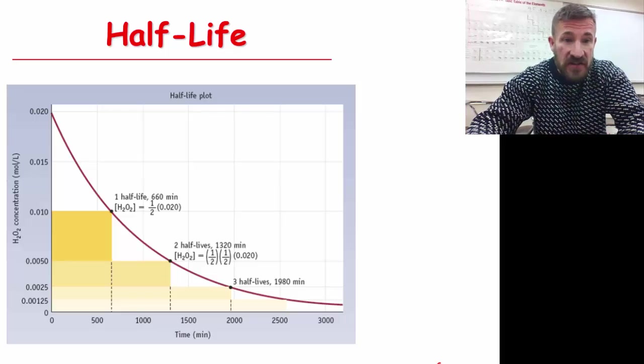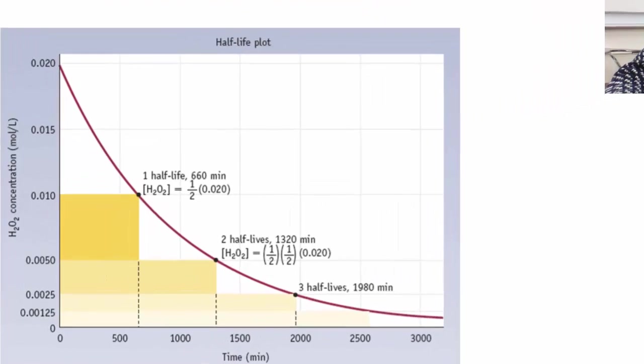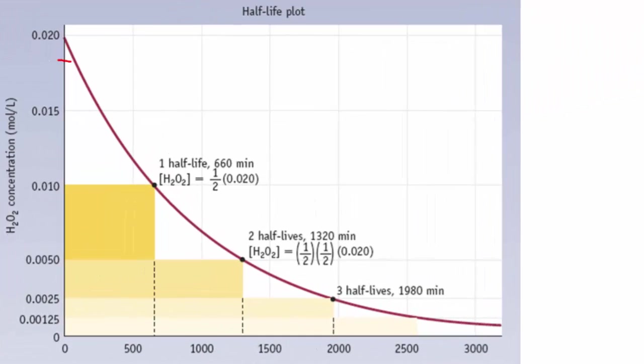We see here that this substance started off with this concentration initially, which is 0.02. At the end of one half-life, it should be down to one-half that amount. So we see here if you take one-half of 0.02, there's one half, and there's the time for one half-life, which is 660 minutes.